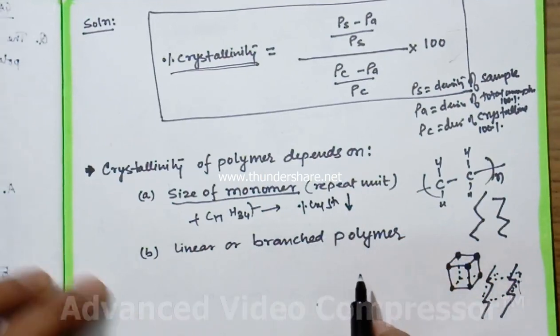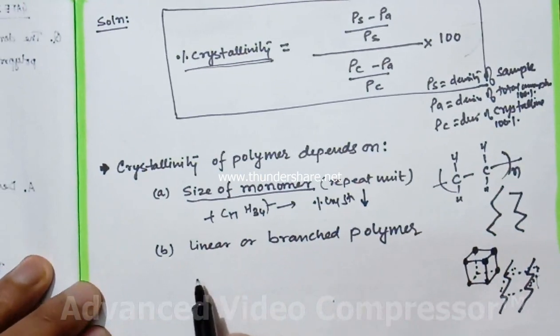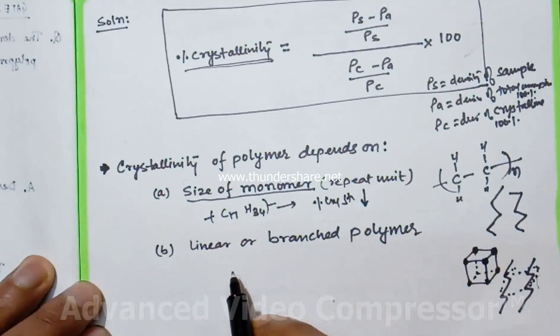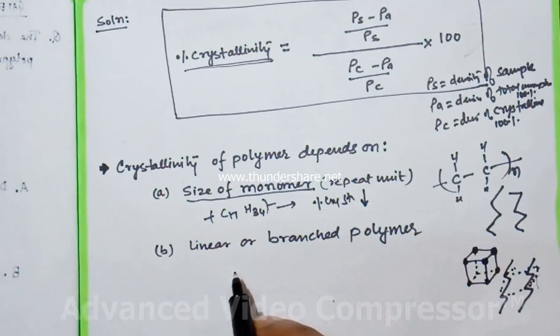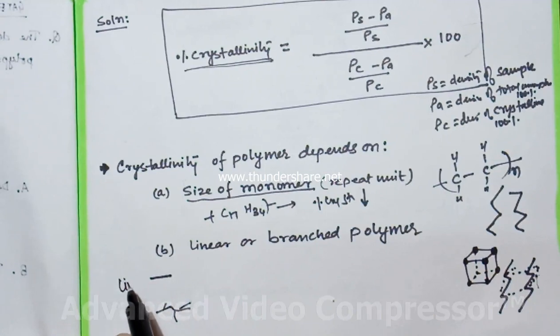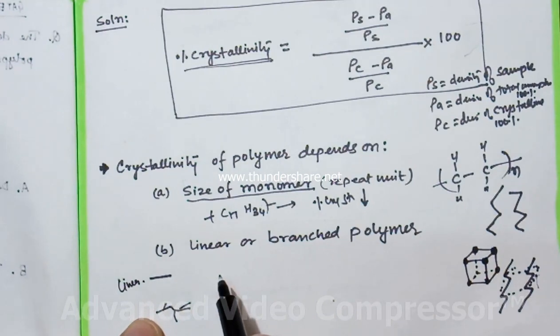The second factor is linear or branched polymer. When we have a linear polymer, it looks like this. Branched polymers look like this. When you cool the linear polymer, it easily arranges and forms a particular pattern.